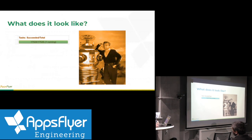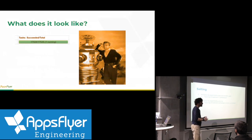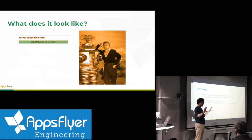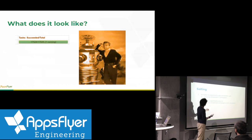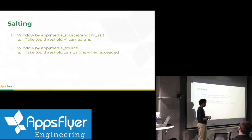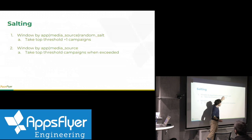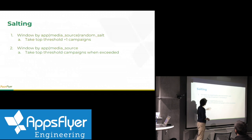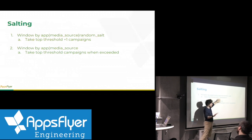One good solution for these types of problems is to add another step in the aggregation where you first distribute the data in a more random way — essentially by adding randomness to the data you can make it scale. Previously we did a window where each bar represented one app media source pair. Now we're going to add a random salt — a random value, could be a string or a number — to the columns in the first stage. Then in that first stage we take all of the campaigns that are less than the threshold plus one extra, which I can explain in a second.